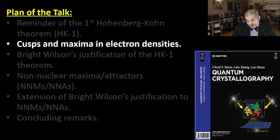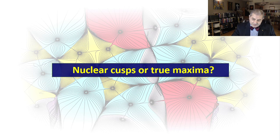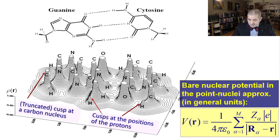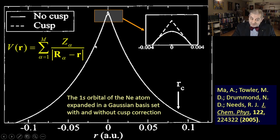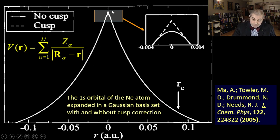Nuclear cusps are an artifact of treating nuclei as zero-size point charges. Because we don't take the nuclear size into consideration, the electron density has a singularity — a cusp — at nuclear positions where the derivative is not well defined. There are algorithms that, using a Gaussian basis set, create an actual maximum with a derivative of zero, correcting for this. This correction is especially important for properties dependent on the density near the nuclei, such as NMR properties.